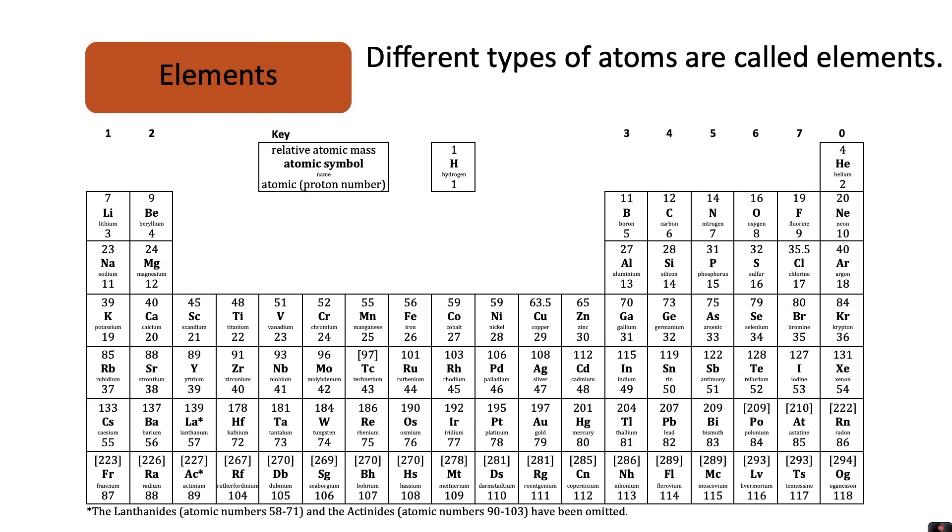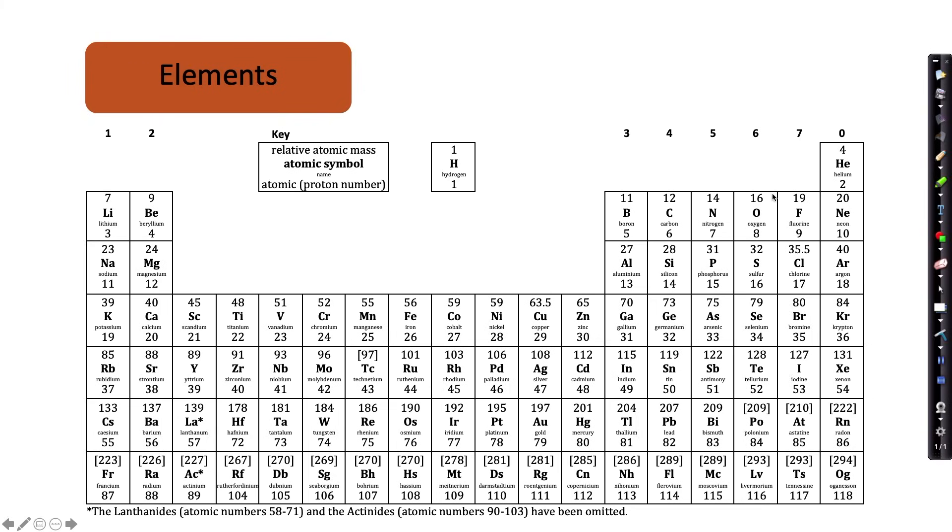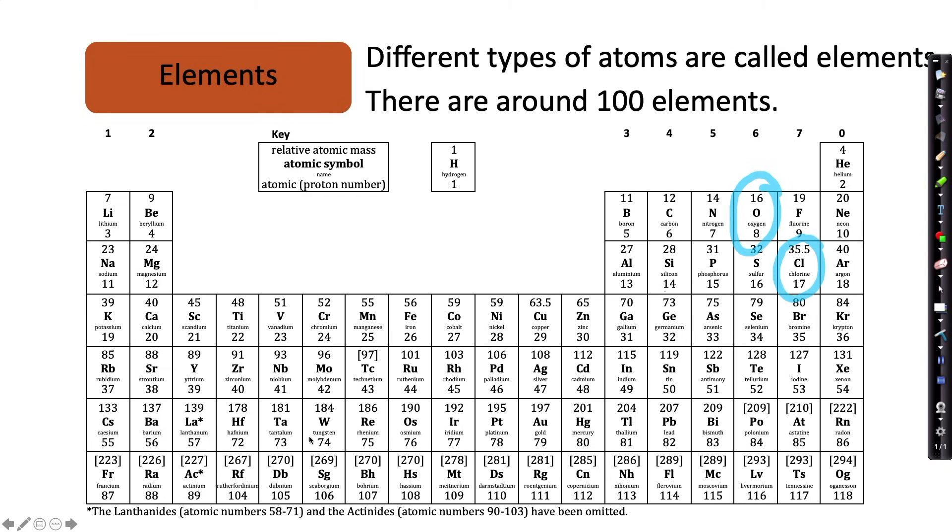Different types of atoms are called elements. There are around 100 elements and we display these in the periodic table. There may be some words that you recognize here. For example, you may recognize the element oxygen. You would have perhaps heard of chlorine before. And I'm sure there's some metals that you recognize, for example, maybe iron and copper.